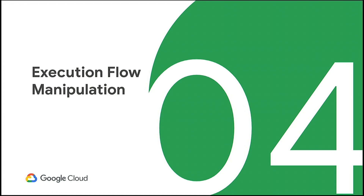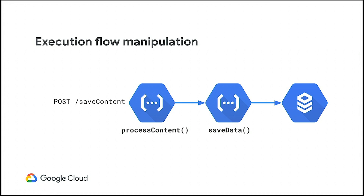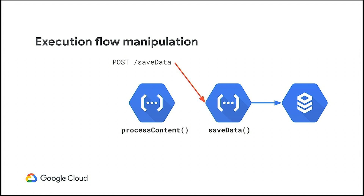Execution flow manipulation is much more unique to serverless. Imagine a simple app: one function processes markdown to HTML, another saves that HTML to a database. The happy path goes straight through — function one calls function two, function two calls the database. But these functions are public on the internet. People can call around them — a malicious call might bypass the processing function and save arbitrary data directly, not respecting the application flow. That's a problem.